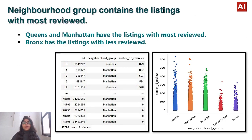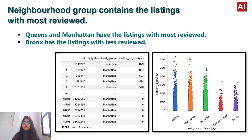Now let's look at which neighborhood group contains listings with the most reviews. Queens and Manhattan have the listings with the most reviews, while Bronx has the listings with fewer reviews. This can be clearly seen from these graphs.